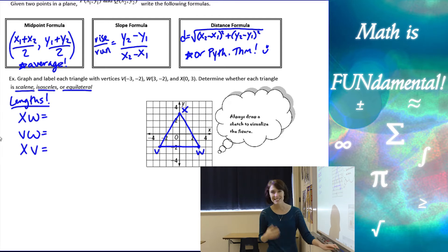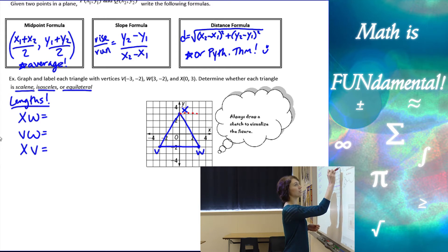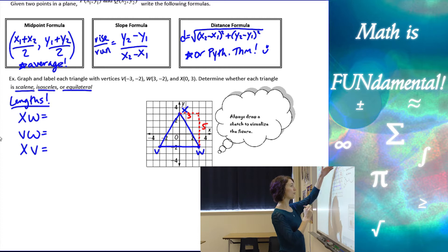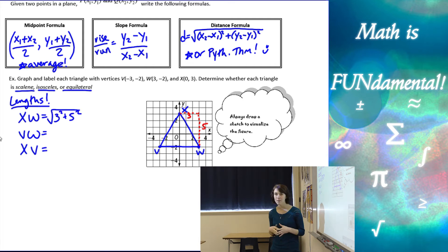Alright, so again, the distance formula, it's a little difficult to remember, and I always find it easier to remember the Pythagorean theorem, and just make your right triangles. So if I make a triangle from x to w, I'm going 3 in this direction, and 5 from 3 all the way down to negative 2 in that direction. So xw is going to be the square root of 3 squared plus 5 squared.